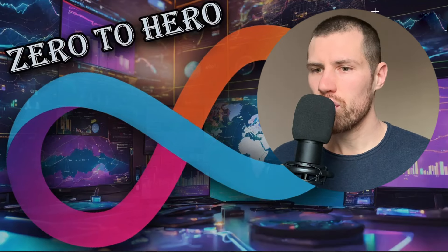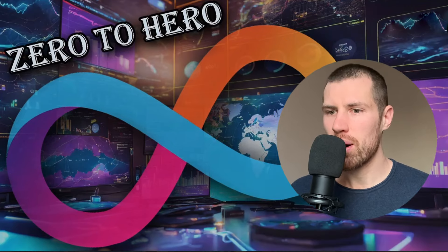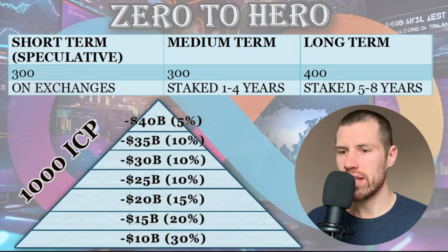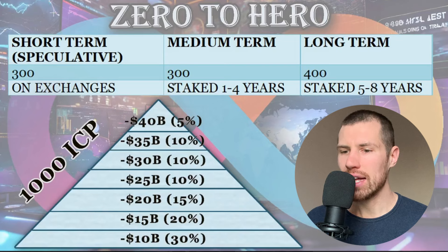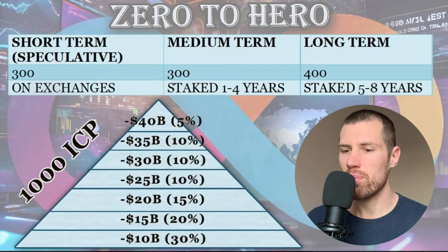Let's dig deep into the rabbit hole. First of all, I want to remind you about my exit strategy for Internet Computer ICP. I hold a short-term speculative bag of Internet Computer, a medium-term bag, and a long-term bag. Starting with the speculative short-term bag, this is 30% of my total allocation in Internet Computer.